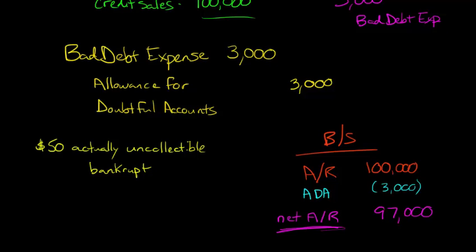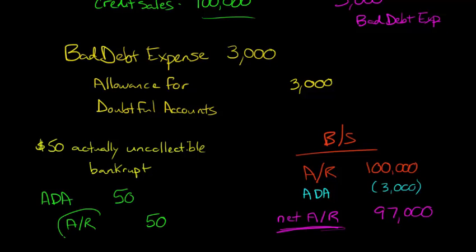So you would actually debit the Allowance for Doubtful Accounts, because you had estimated before that a certain amount won't be paid, but now the estimation for this $50 is over — it's actually uncollectible. So you're going to debit Allowance for Doubtful Accounts for $50, which reduces it. And then you're going to credit Accounts Receivable for $50. Accounts Receivable is an asset, so it goes down with the credit. Basically, when someone actually does not pay you, the estimation part is over — it's uncollectible. So we reduce our allowance account and credit and reduce our Accounts Receivable directly.